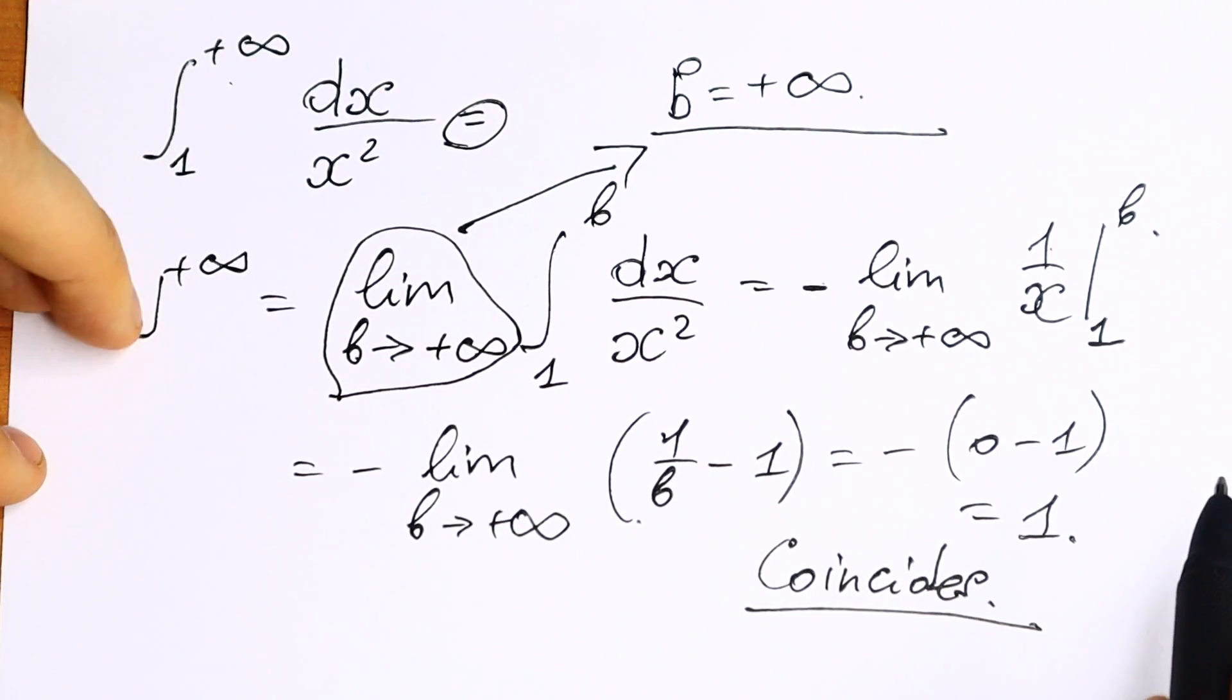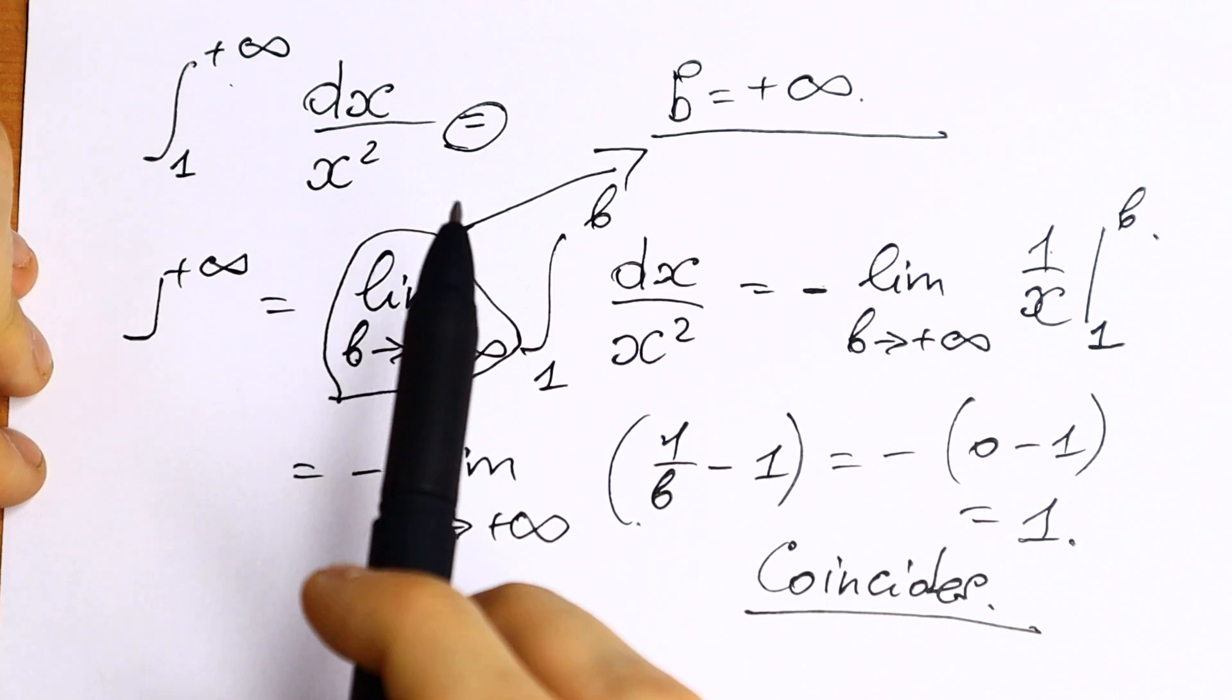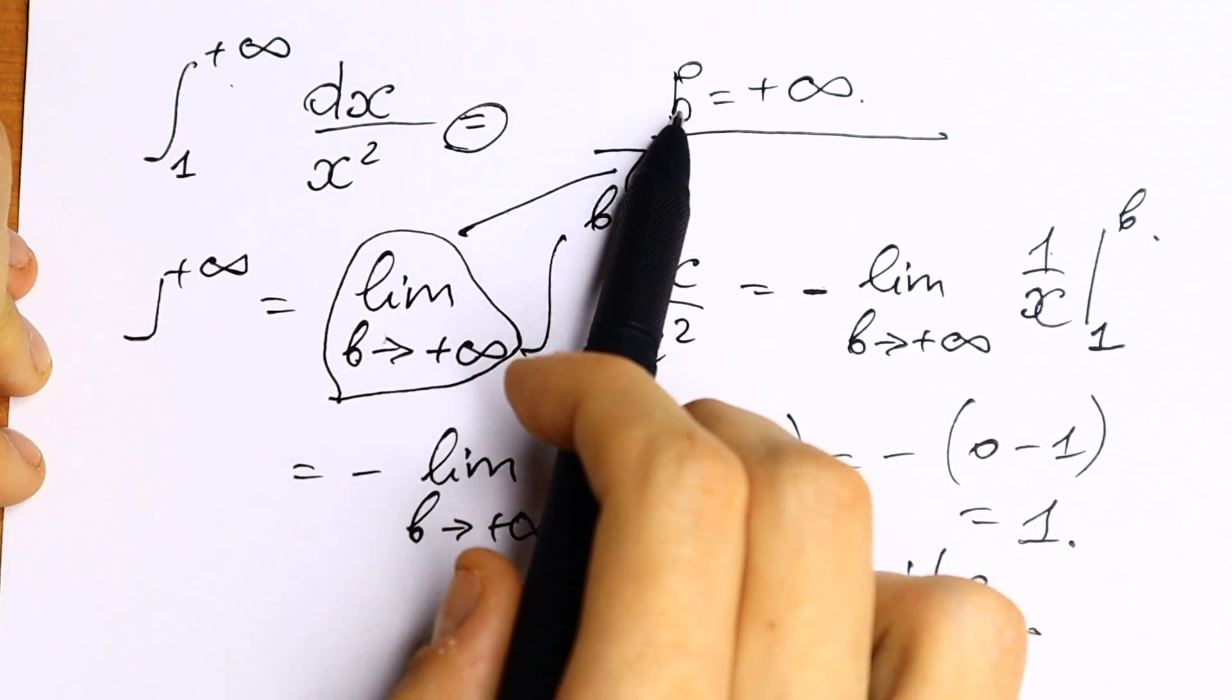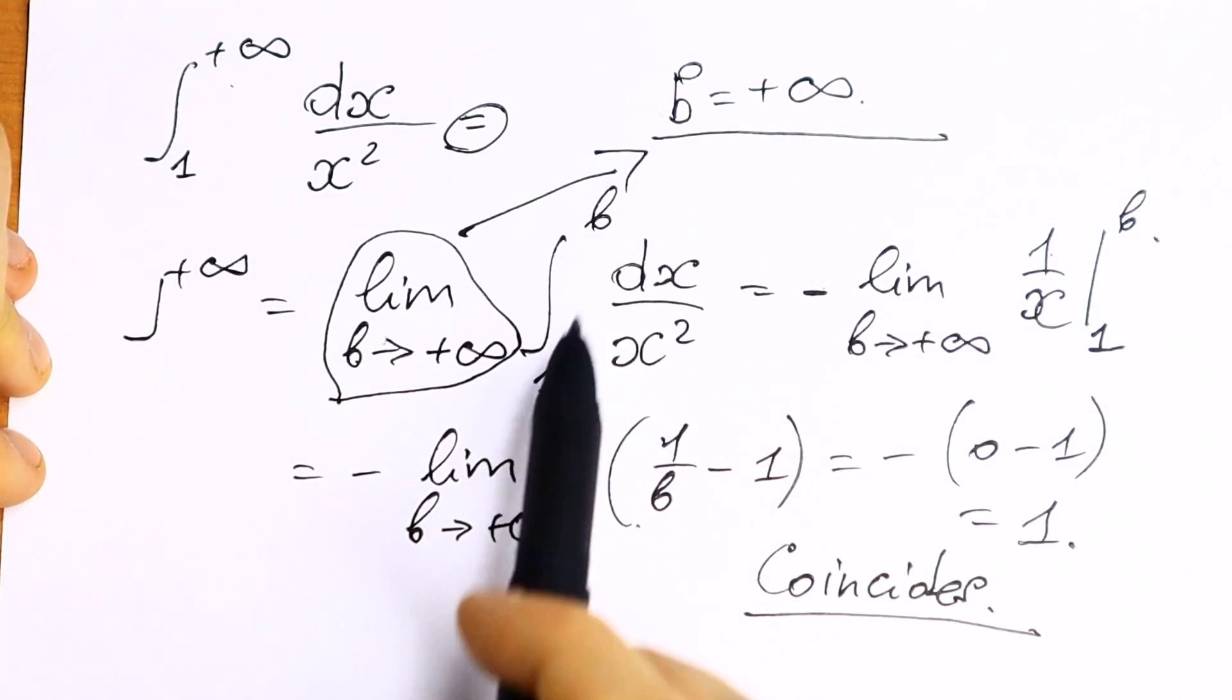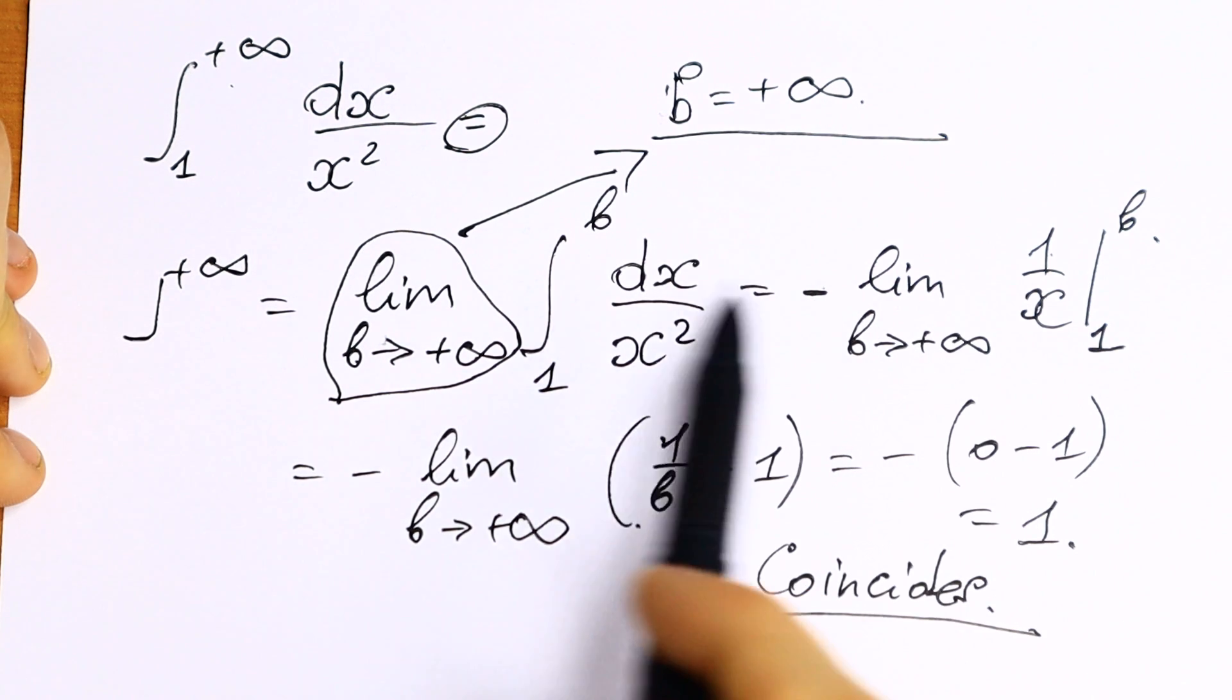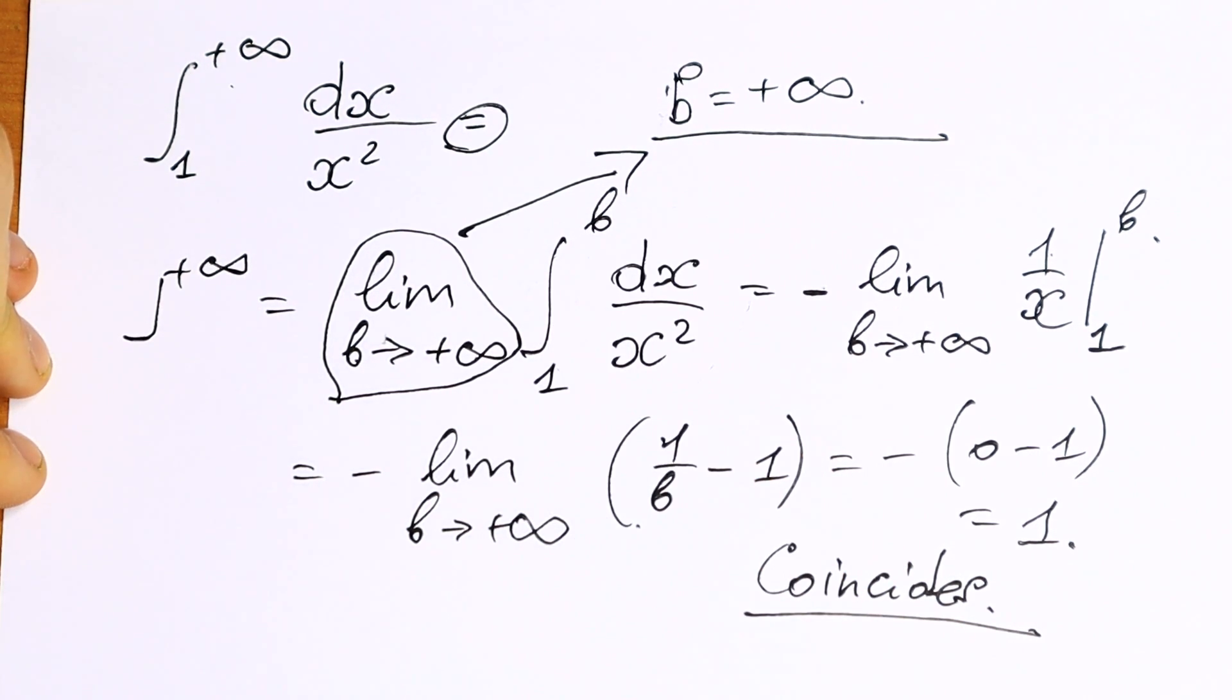So we can write that our integral converges. This is our solution. First of all, writing the limit of our integral, put the substitution, in our case it will be b, and of course we need to find our integral as well.